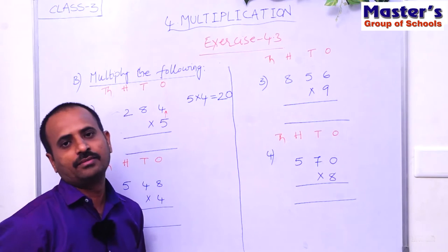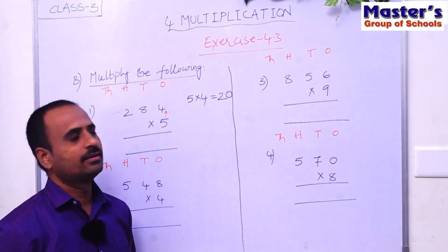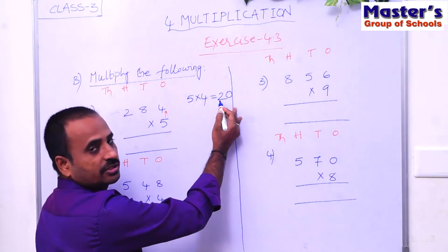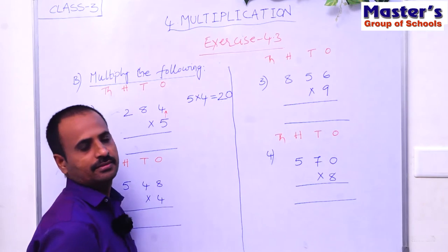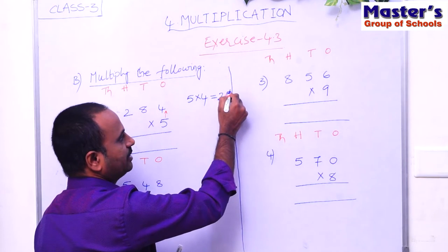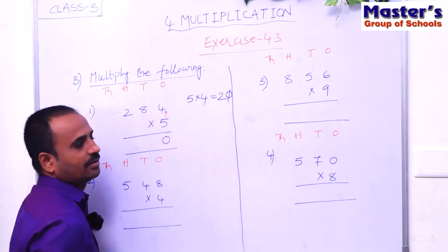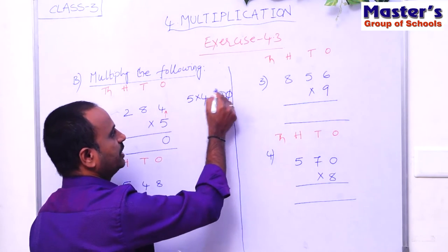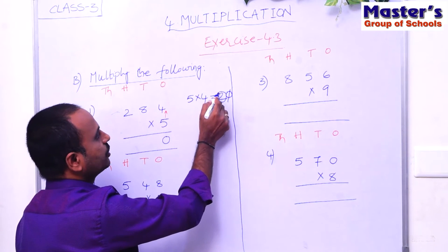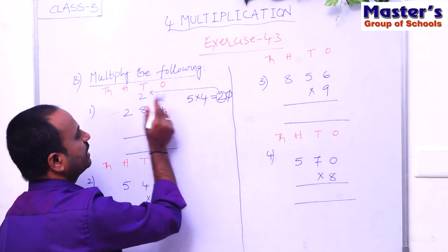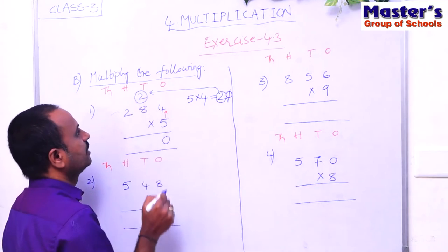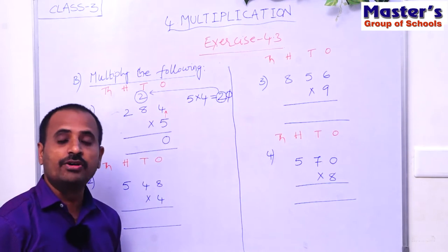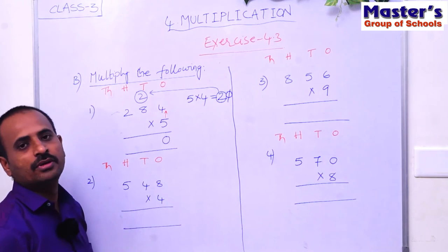Here 2 is the first digit and 0 is the second digit. Write the second digit 0 under ones place, and carry the first digit 2 to the next place — the tens place. We have to add this carried number to the product. Now multiply the digit in tens place with 5.